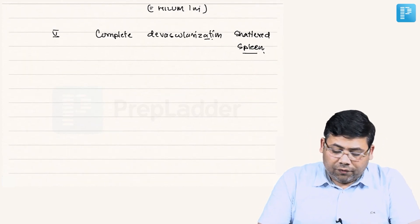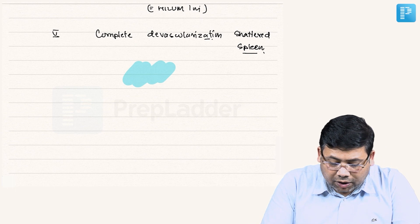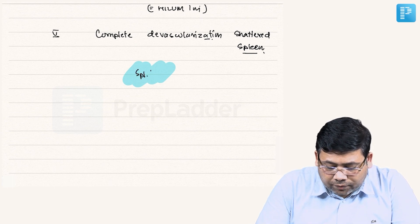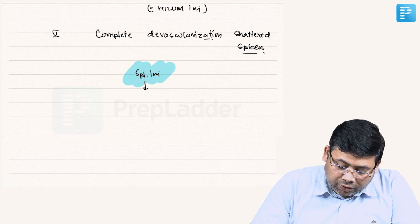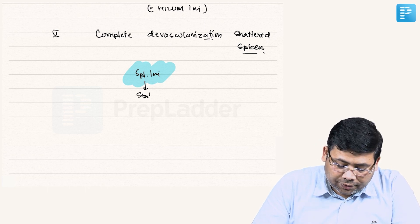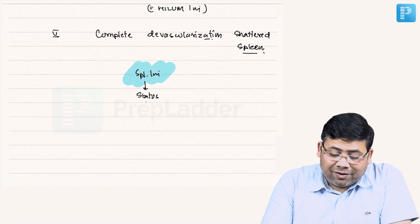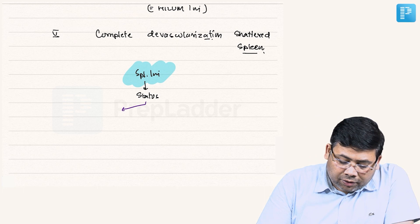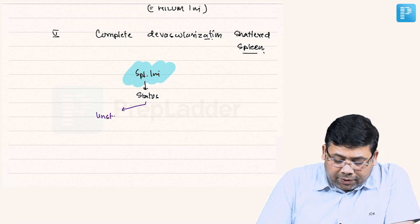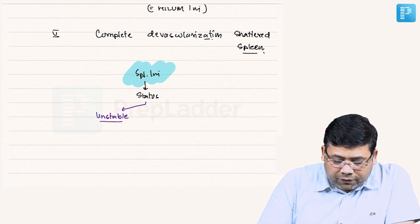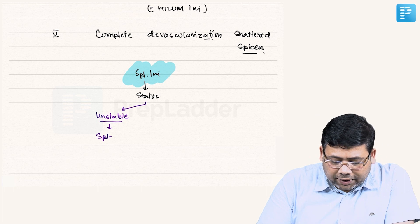When we talk about treatment and the approach to splenic injury, the first thing is you have to go for the status of the patient. Remember the dictum: you can live without a spleen but you cannot live with a bleeding spleen. If the patient is unstable, you always have to go for splenectomy. Don't have a second thought. If the patient is stable, go for CT scan.